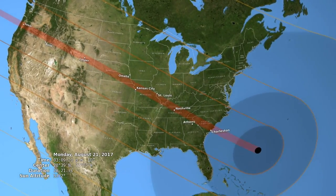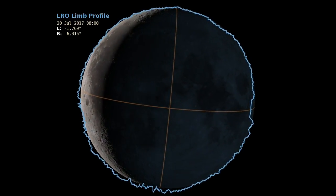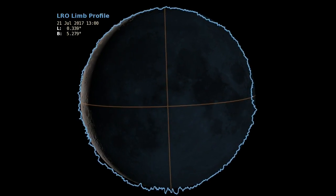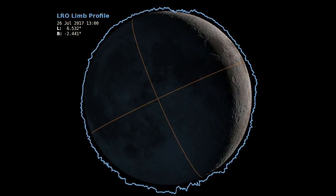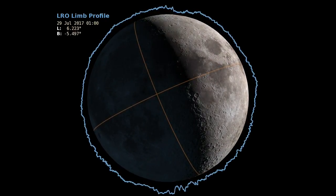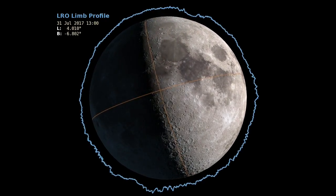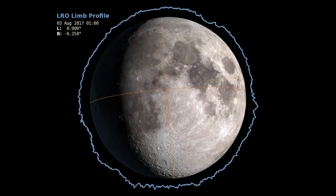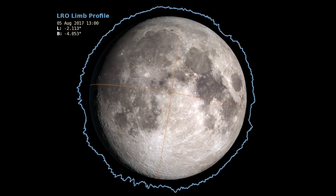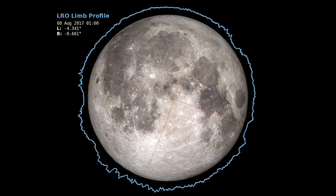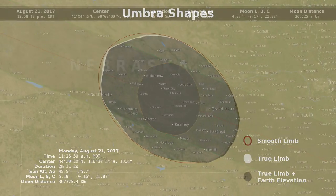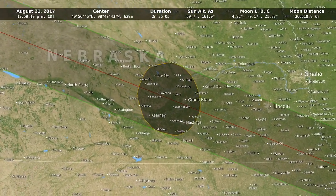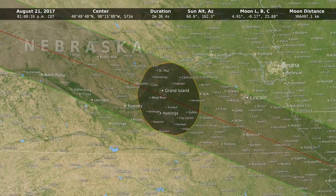Around the edge of the moon, we have these jagged peaks and valleys. A peak can block the sun a little bit earlier than you thought, and a valley can let the sun in a few seconds longer than you thought. The combined effect of these peaks and valleys is to create a shape that's not really an oval — it's more like a polygon. But it hasn't actually been seen in exactly this way before, where we calculate those circumstances for every point on the map and draw that shape.